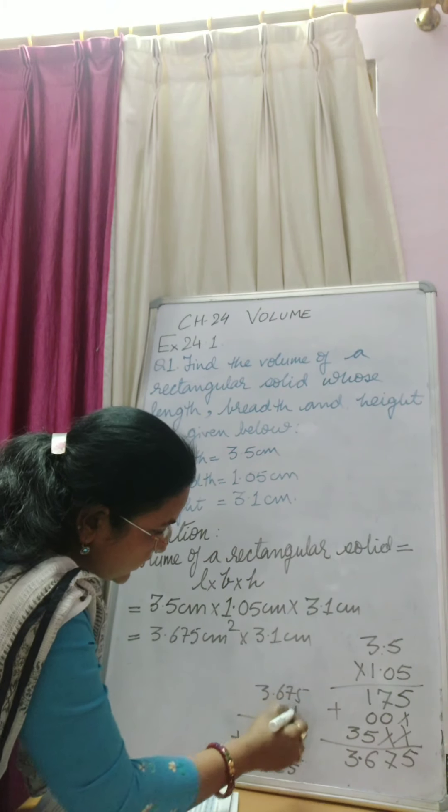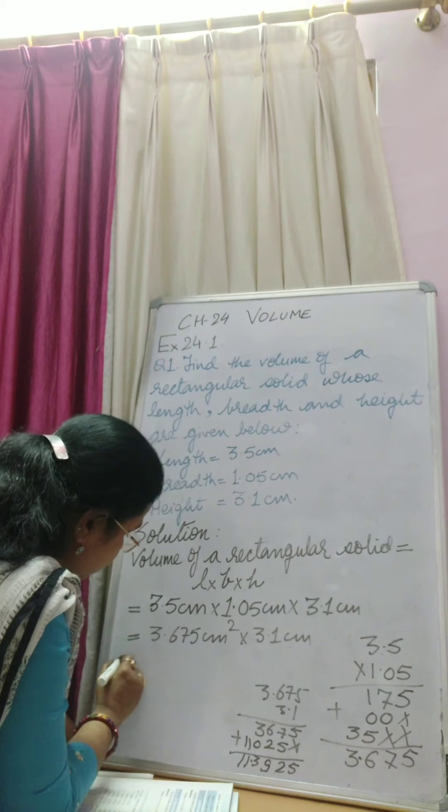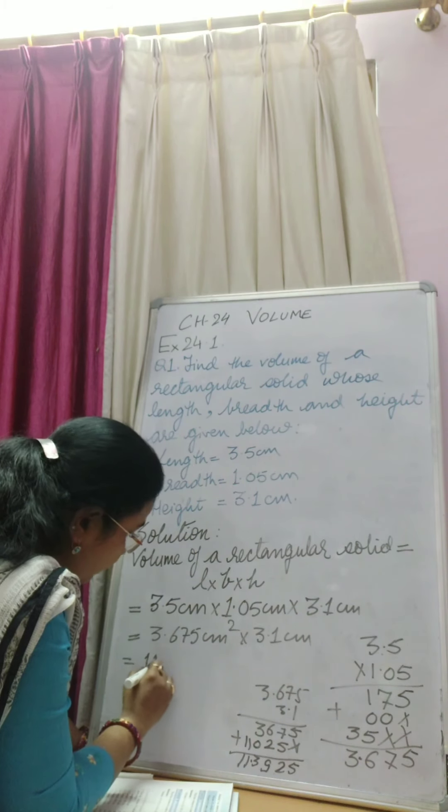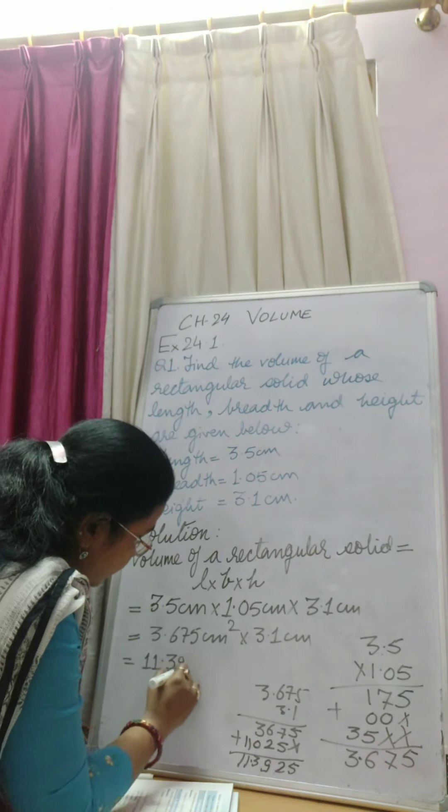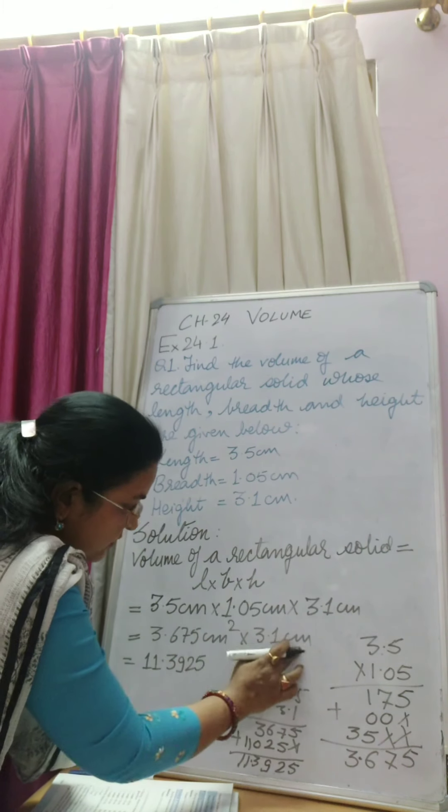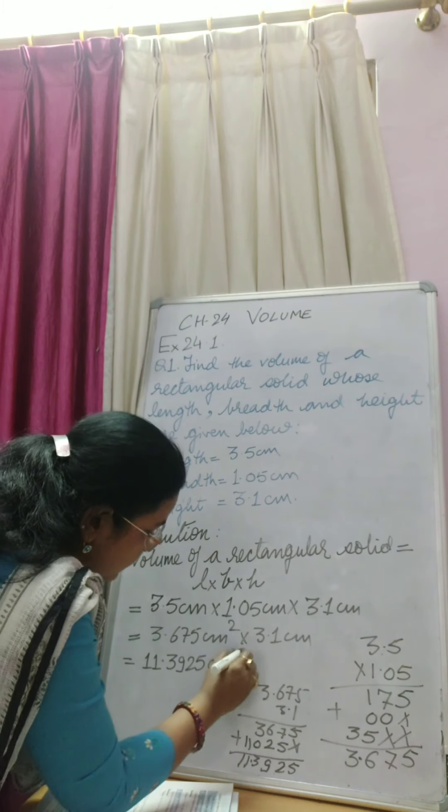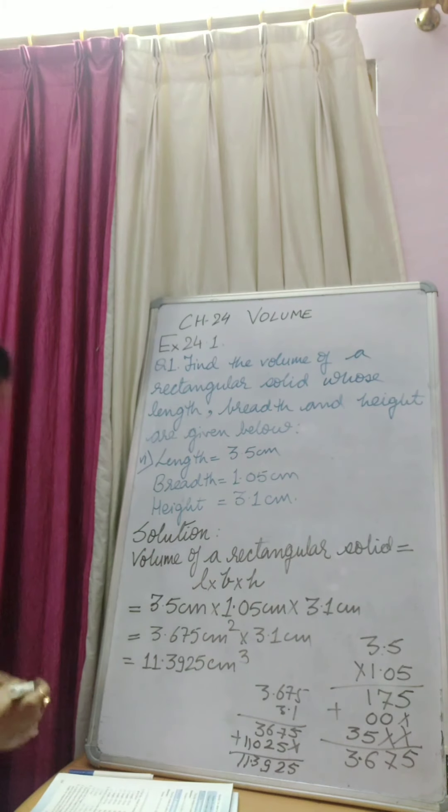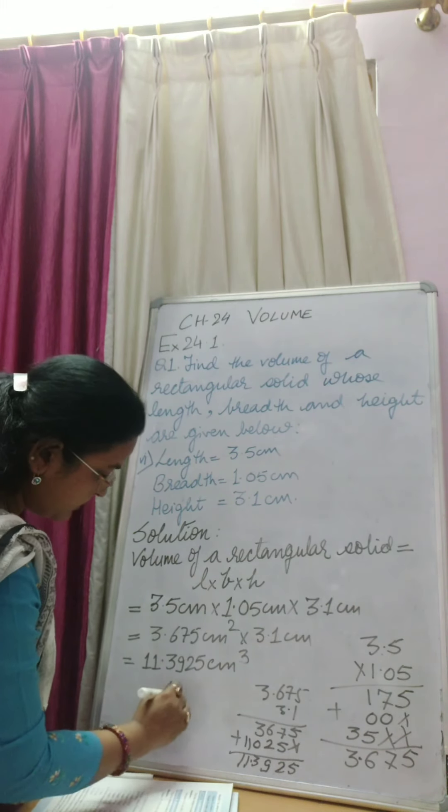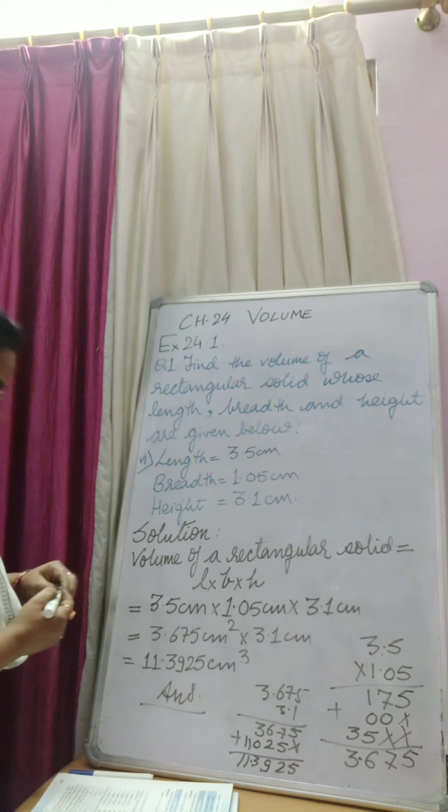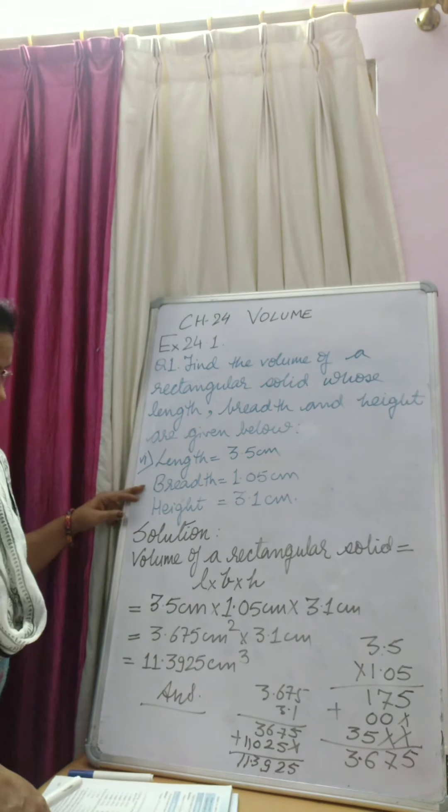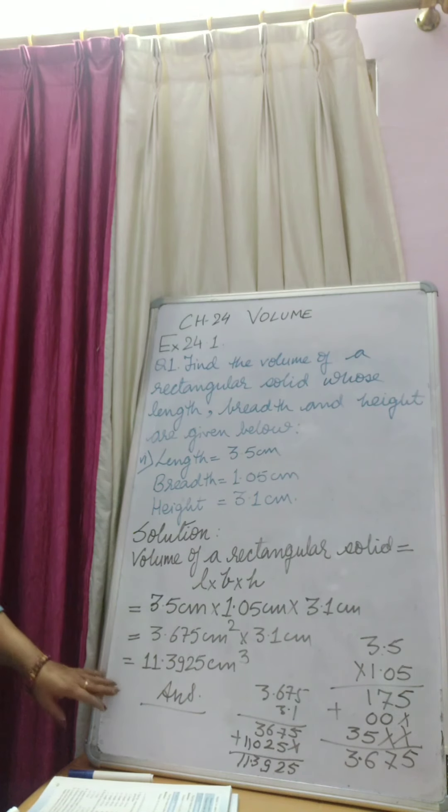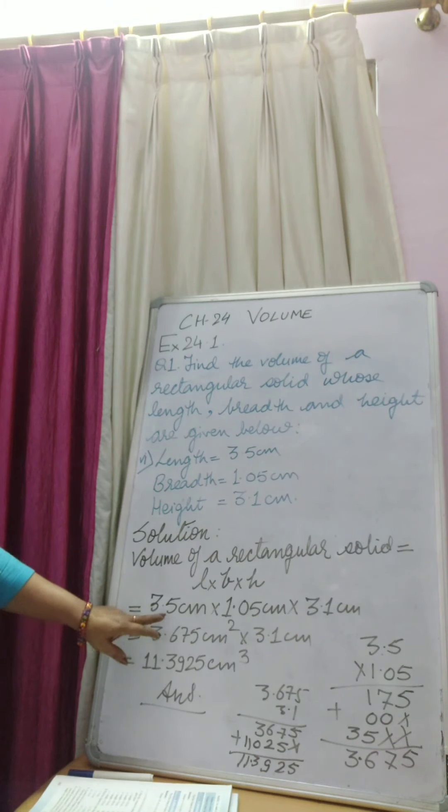How many decimals? 1, 2, 3, 4. So this is 11.3925. Now cm squared into cm that comes to cm cube. So this is the volume of the rectangular solid with length 3.5 cm, breadth 1.05 cm and height 3.1 cm. The answer is 11.3925 cm cube.